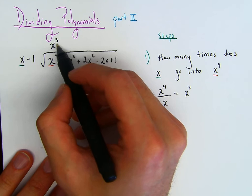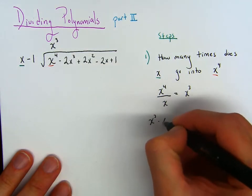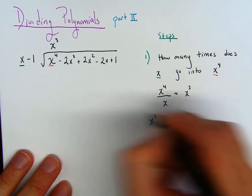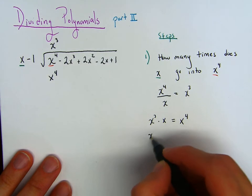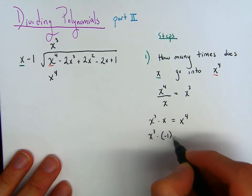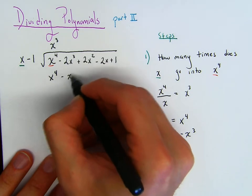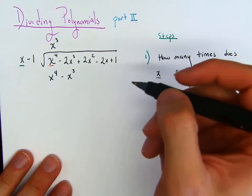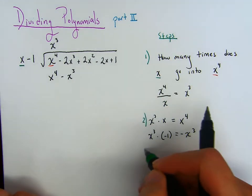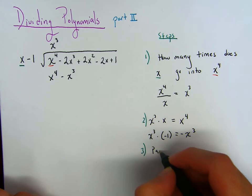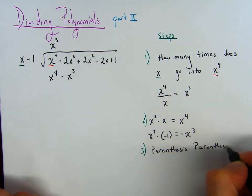Then what would we do next? We multiply x cubed times x — that'll be x to the fourth — and put it over here. We're also going to do x cubed times minus 1, and that'll be negative x cubed. We'll put that over here. Then what would be the next idea? This was step one, this was step two. What would be step three? We would say: parentheses, parentheses, subtract.